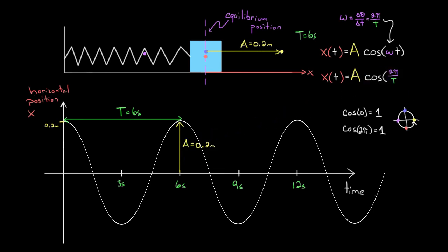Little t is our variable. Two pi is a constant. The period capital T is also a constant—it'll be different for different harmonic oscillators, but for a given harmonic oscillator the period is a constant.